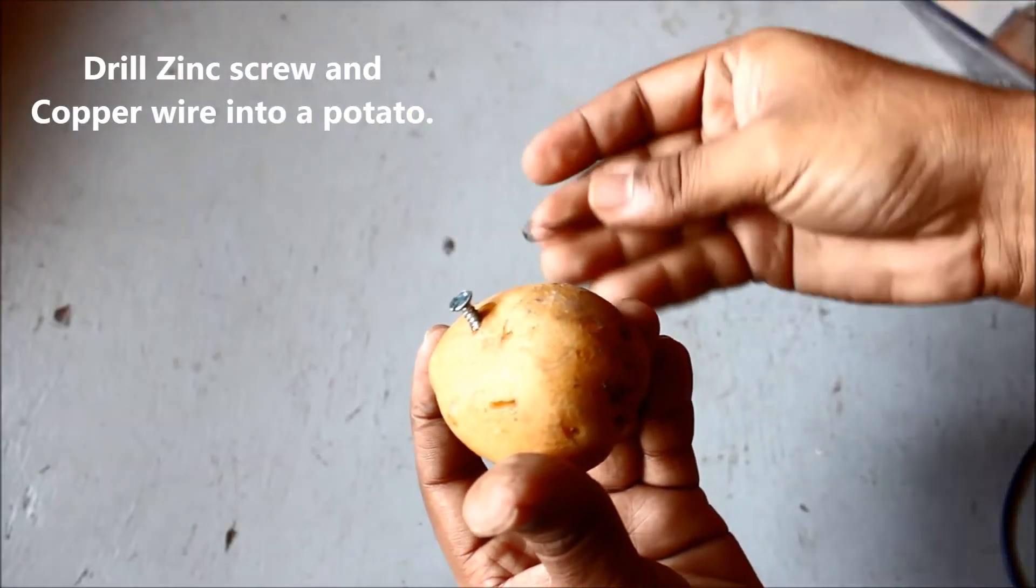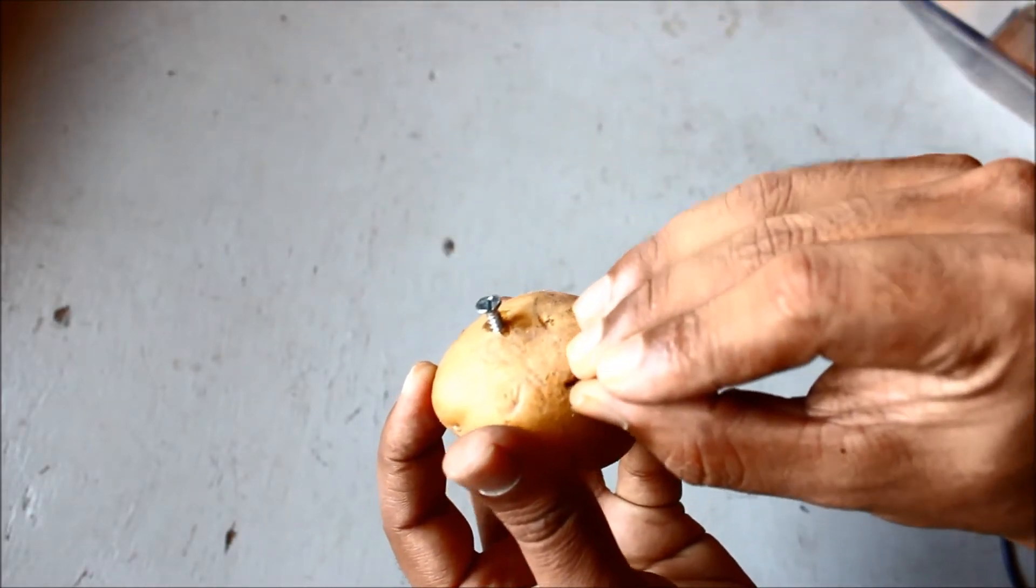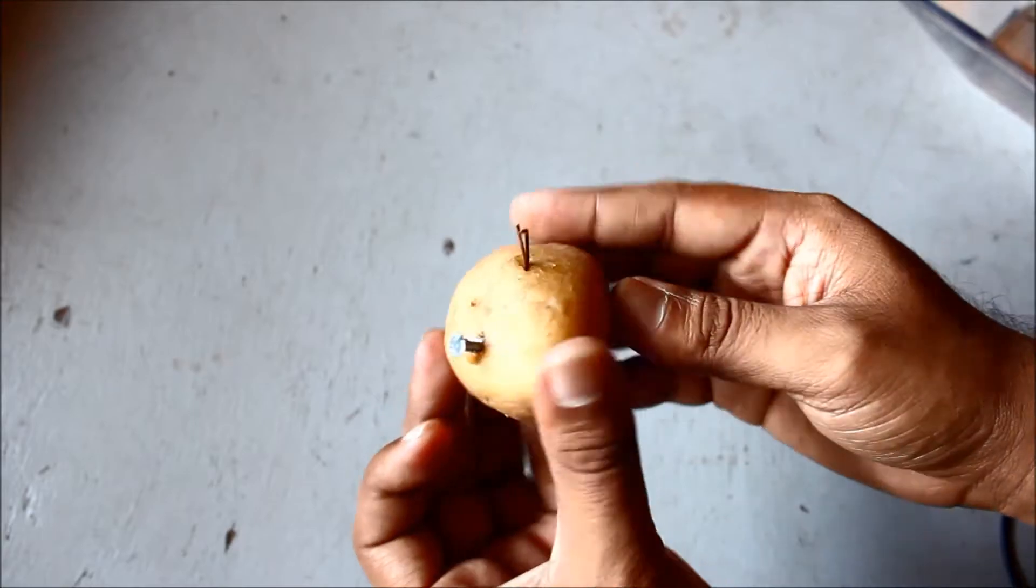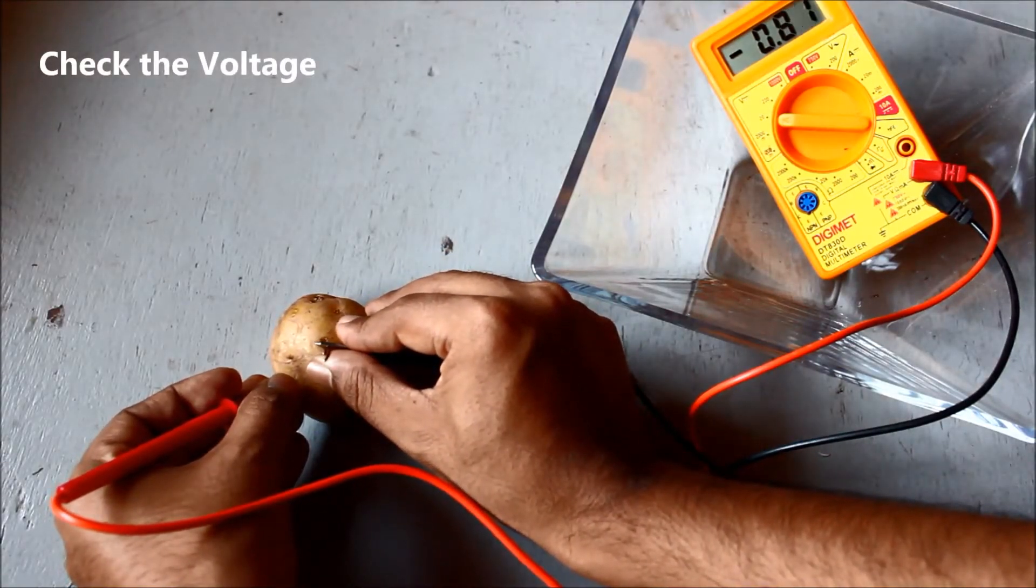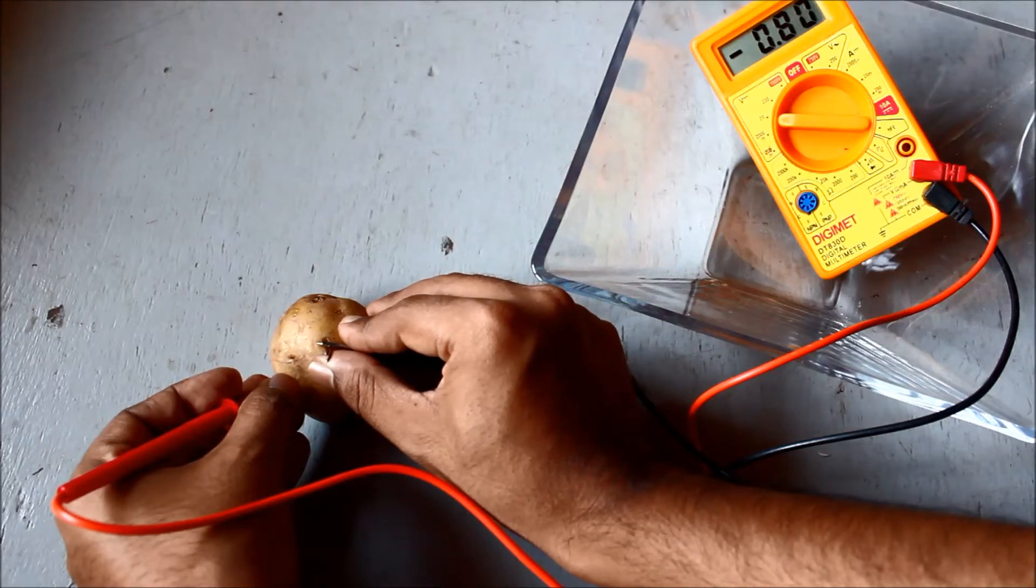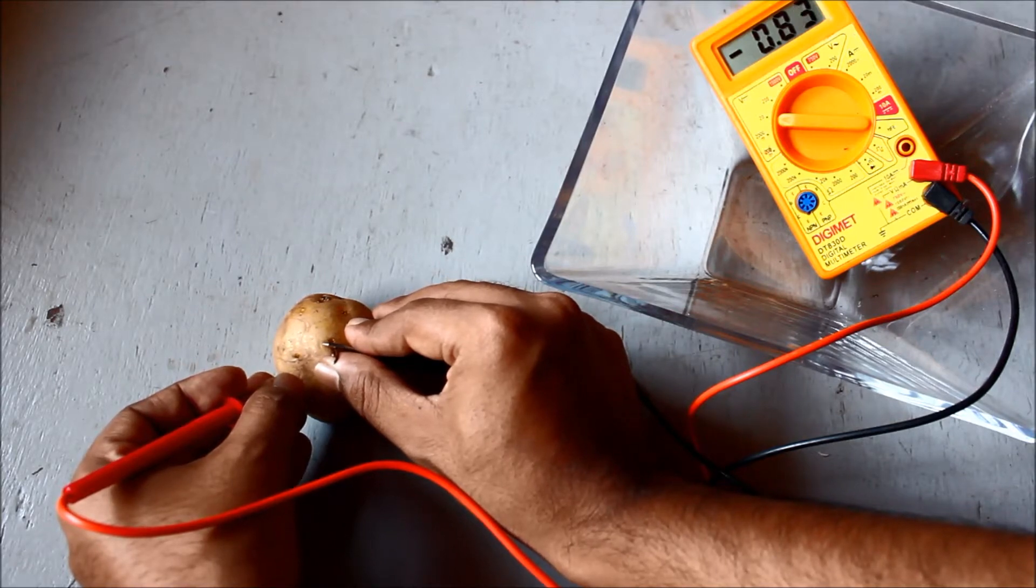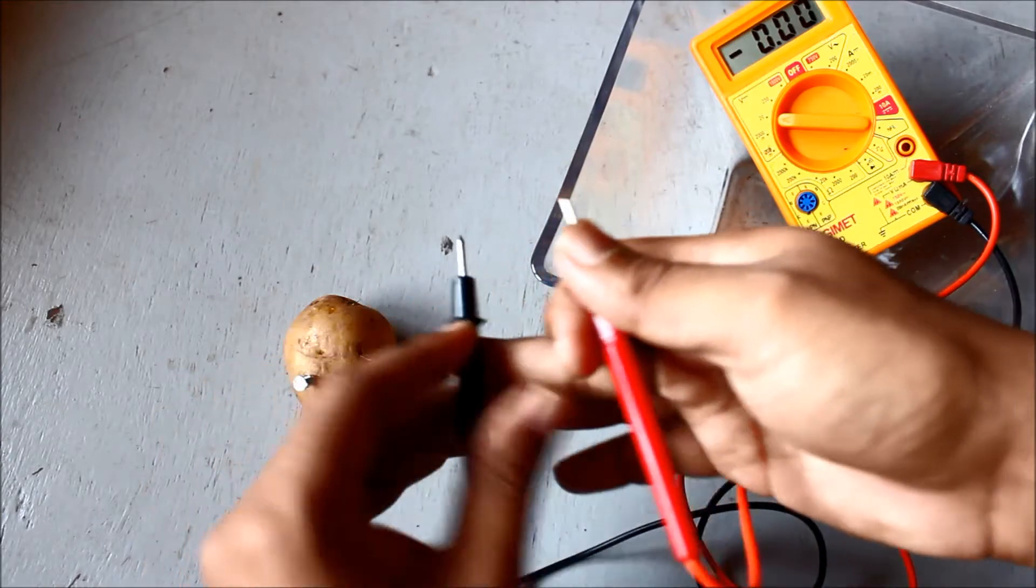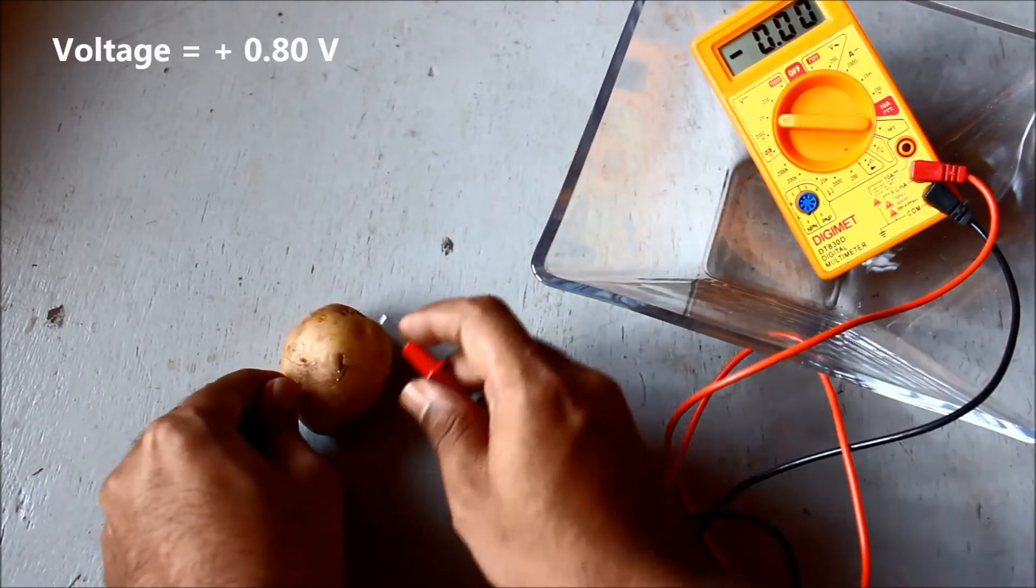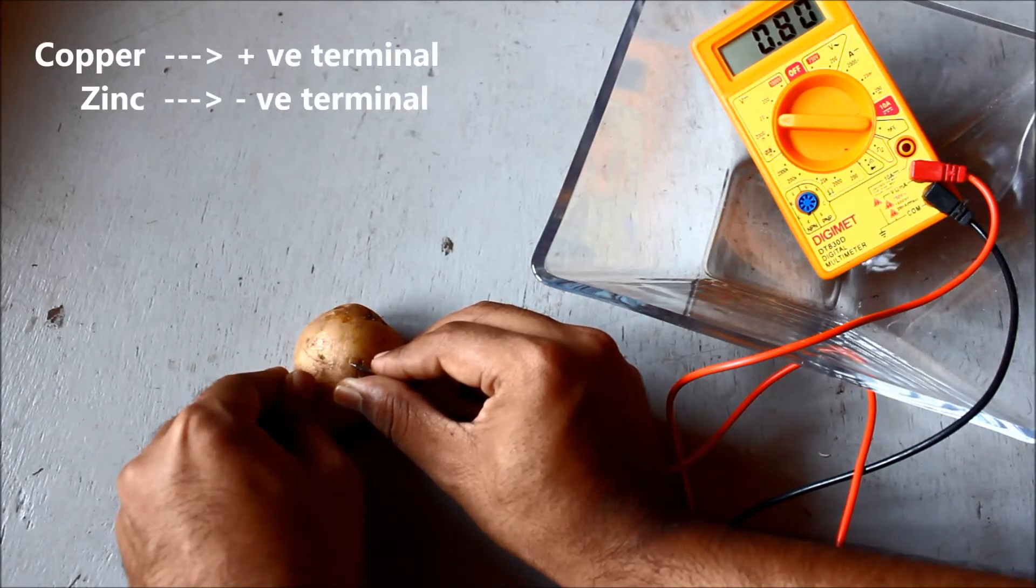Second step is to drill the screw into the potato, and then insert a copper wire inside the potato at a different place. So these are the two different electrodes immersed into an acid. Now let's check out the voltage. It's around minus 0.08 volts. So did you notice the minus sign? It means that we have connected the leads to the opposite side. So now let's see, it's plus 0.80. This means that copper is the positive terminal and zinc is the negative terminal.